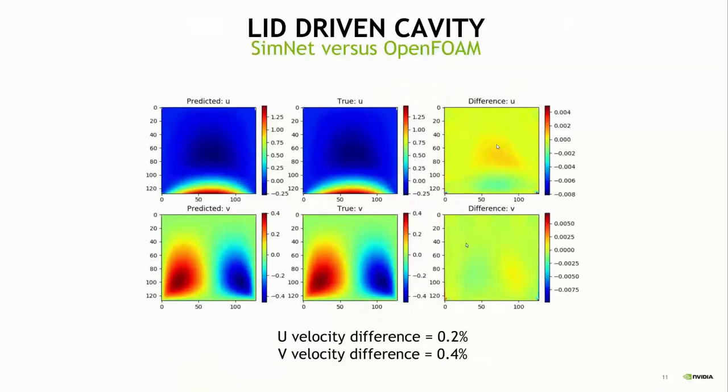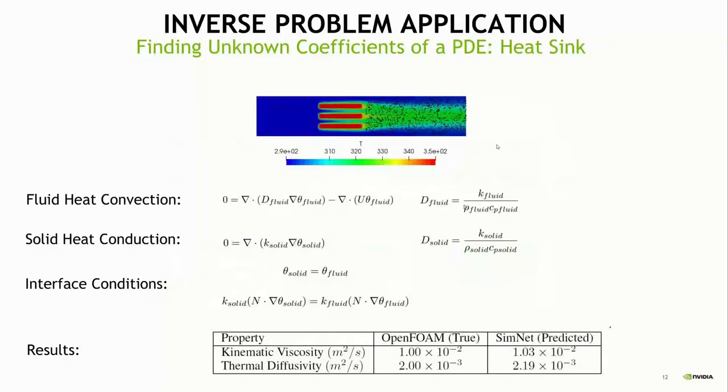I wanted to quickly show some results for fluid flow problems. Here is a lid-driven cavity. This is just a standard forward solution compared with an open foam solution. We see we can get pretty close, pretty good results with less than 1% difference between the two solutions. And you can also solve inverse problems. This is a heat sink where we have a few points where we know the velocity and temperature values, but we don't know the kinematic viscosity and the thermal diffusivity of this fluid. We can use this inverse problem approach to back out those values. And again, when you compare them with the true solution, they're pretty close.